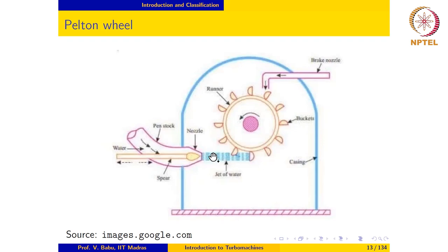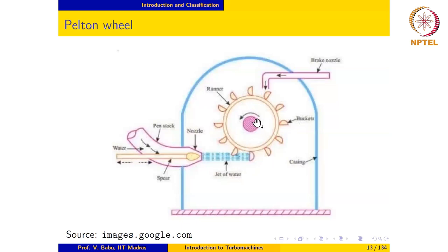So this machine does not fit the earlier classification because the enthalpy remains unchanged. We will have a detailed look at the runner, how it generates power, and the design and working aspects of the Pelton wheel later when we talk about hydro turbo machines. This machine would be classified as a hydro turbo machine because the working fluid is water. The flow in the rotor is, strictly speaking, neither axial nor radial — it is a very unique device in contrast to all the other devices we have looked at.